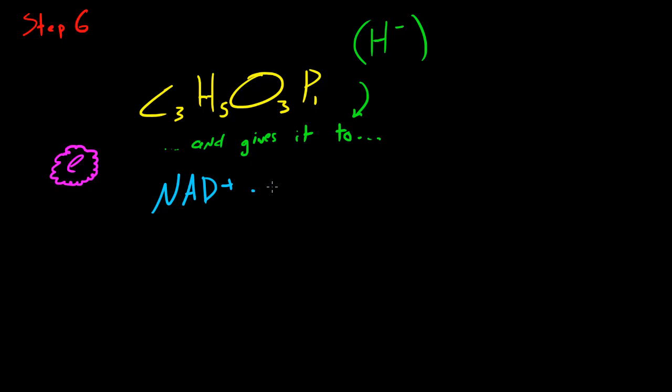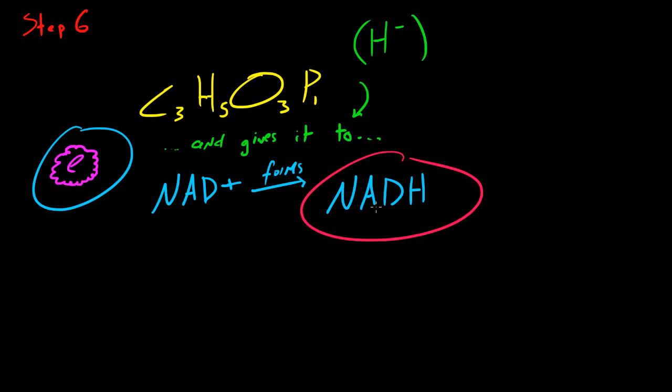So basically, we have glyceraldehyde phosphate, which is C3H5O3P1, and what this enzyme does right here is it takes a hydrogen ion, which is right here. And it gives that ion to another molecule called NAD+. And whenever you give a hydrogen ion right there to NAD+, it forms a molecule called NADH. So basically, this enzyme right here is responsible for taking a hydrogen ion off of this glyceraldehyde phosphate and gives it to NAD+. And the final thing we need to take away from here is in step number six, we form NADH.